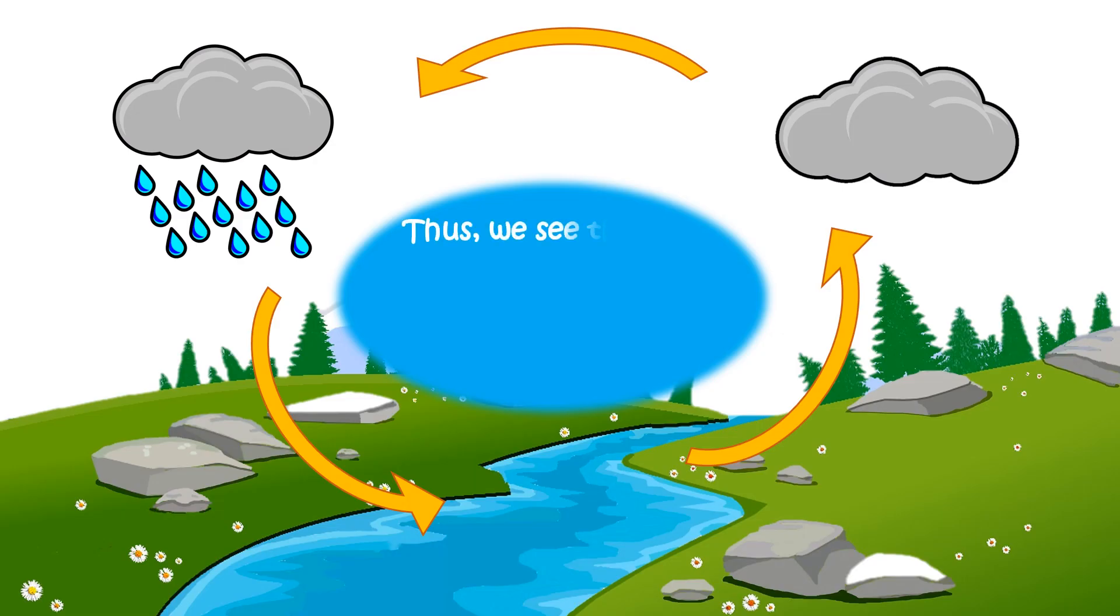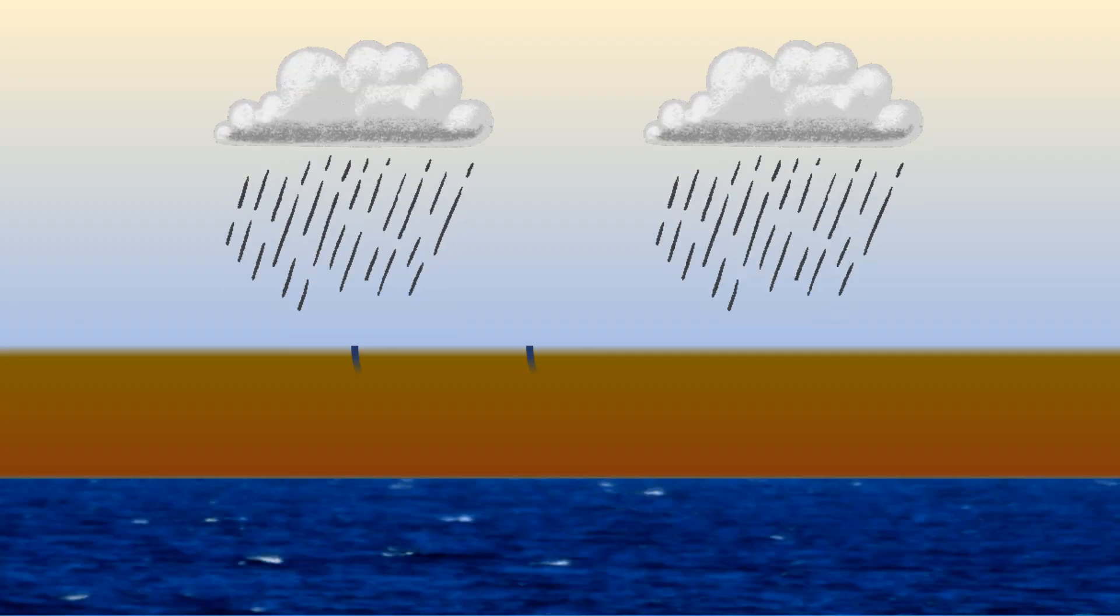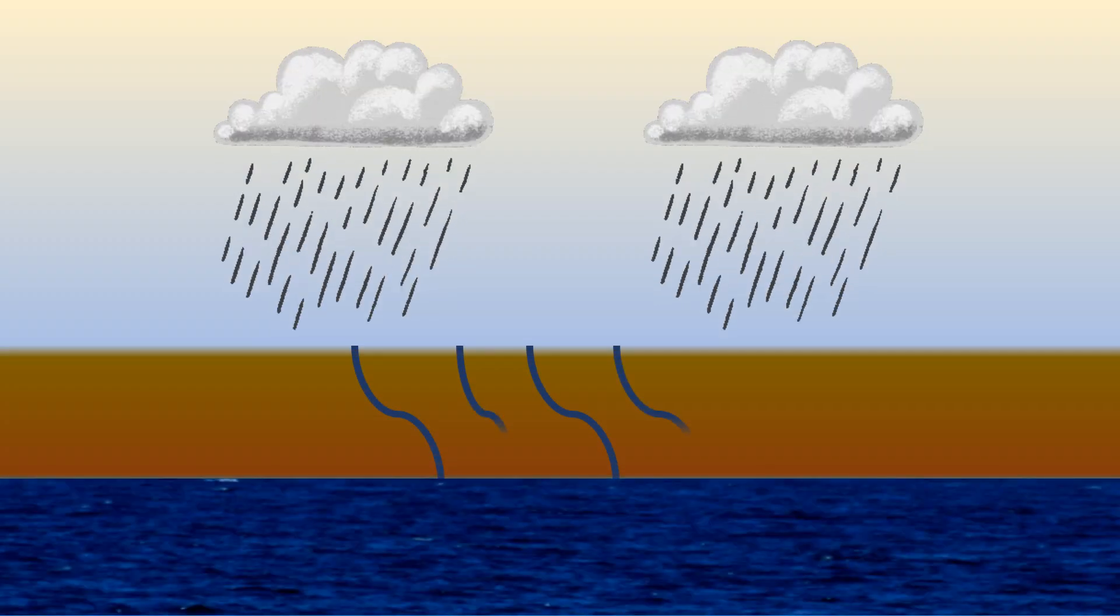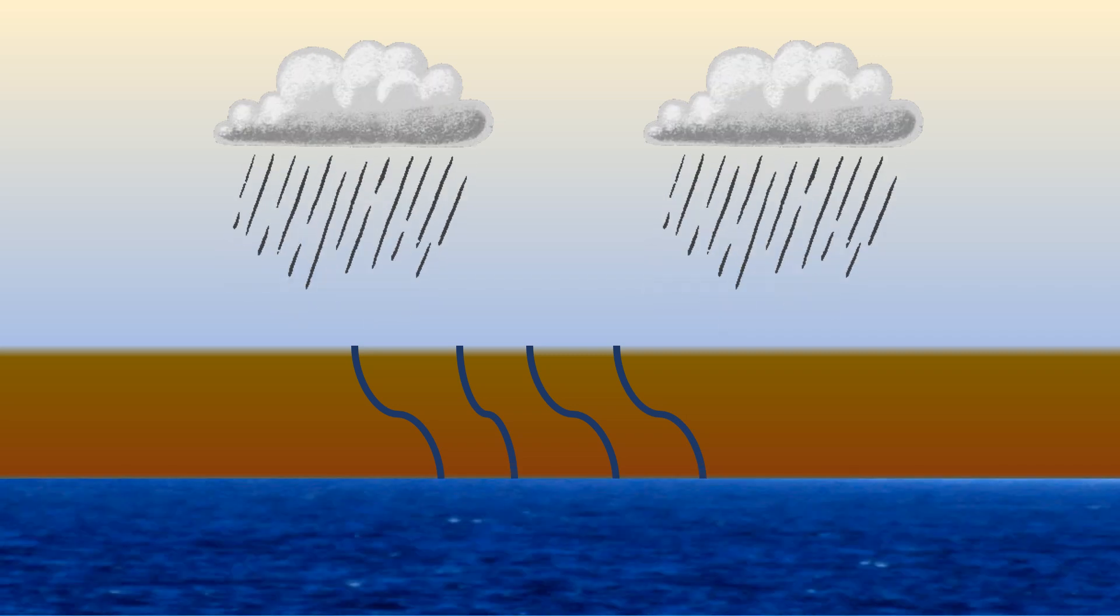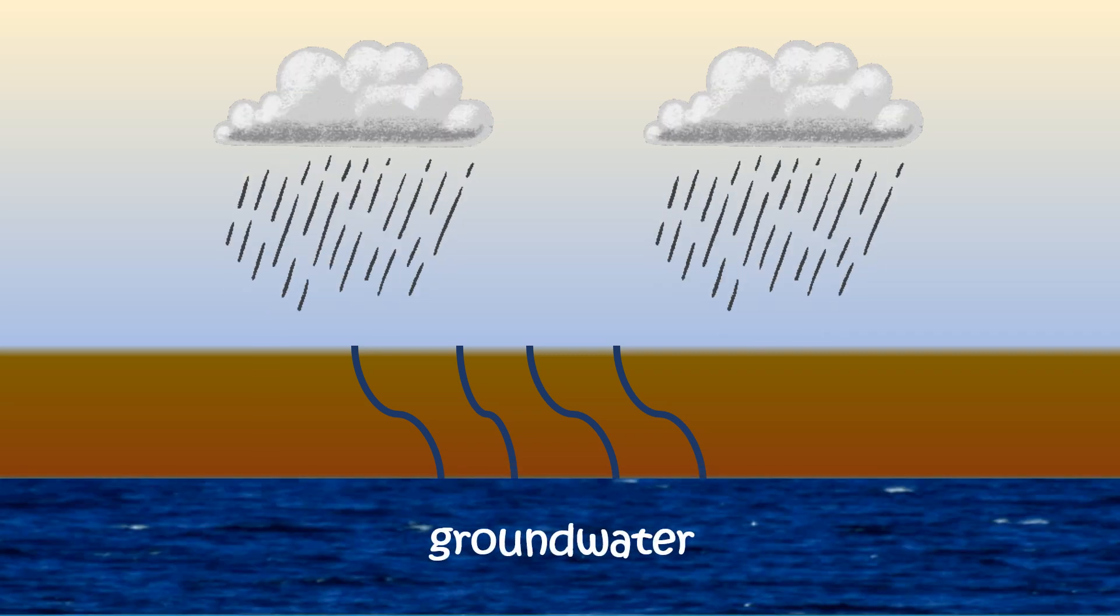Thus, we see that the water again returns to the surface of the earth. Some of this water seeps deep under the ground and is available for our use. This water is known as ground water.